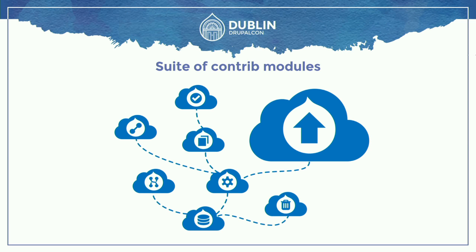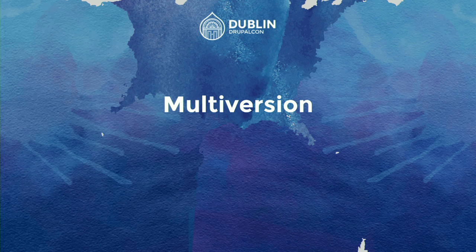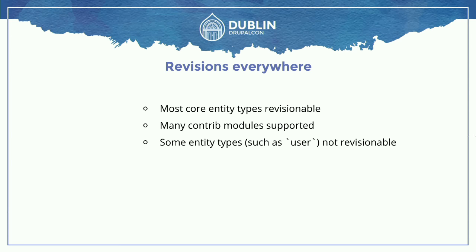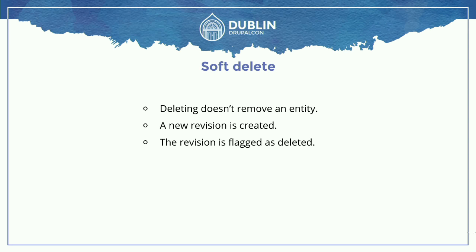Let's start with Multi-version. Multi-version is the base module you need to get all this working. The main thing it does is put revisions everywhere — every content entity in Drupal 8 will now be revisionable because of Multi-version. We also override a lot of other things in the entity types to make them work better with the deploy suite. We added a soft delete, so when you delete something it doesn't actually disappear.